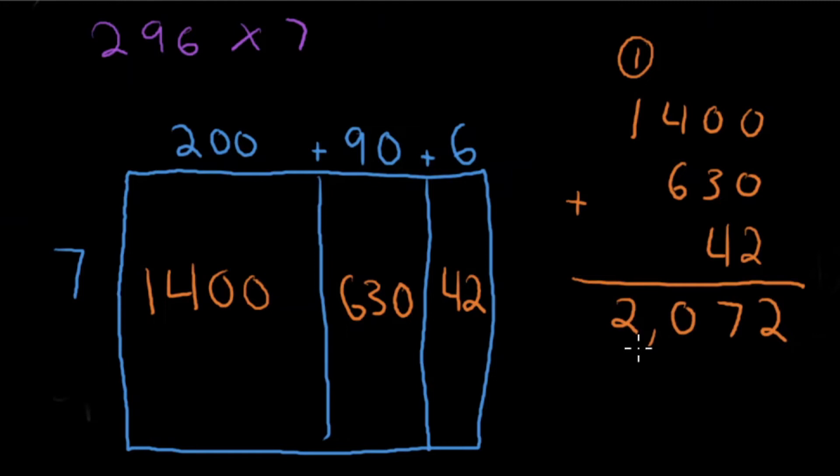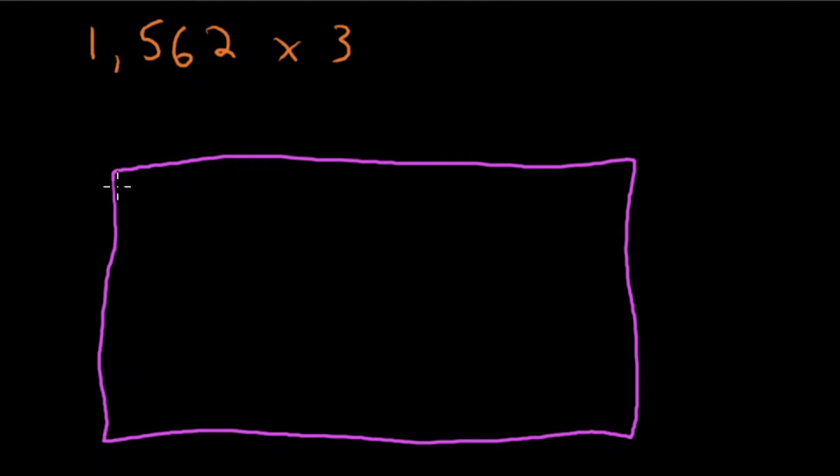If you did not get this correct, pause the video and see where you made your mistake. Growth mindset is so important to being successful in math — make sure you have the right mindset coming into this. Be okay with struggling, be okay with making mistakes, and use those mistakes to learn and get better. Mistakes help our brain grow. Redo the problem, see where you're making your mistakes, and then let's try another one.